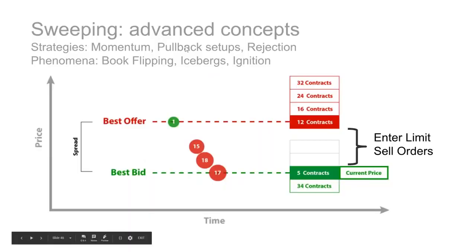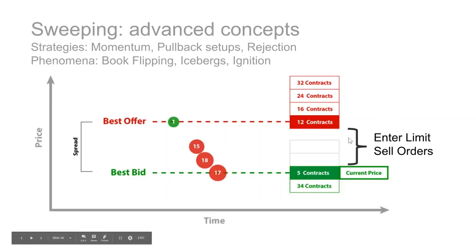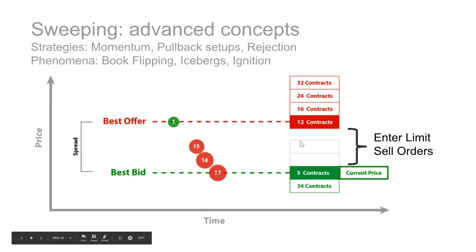Let's look at some of the advanced concepts around sweeping. For example, looking for pullbacks to enter: if you believe the sweep means we're going to accept down to lower levels, you can start placing your limit orders in those areas, looking for that pullback because there's been a vacuum. You could also play momentum — looking for that sweep and joining in — or you may be looking for rejection. You're also going to see book flipping, sweeps into icebergs, and those ignition algos as well.